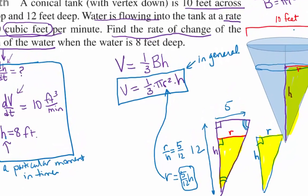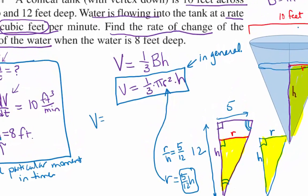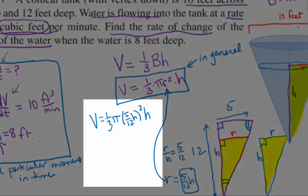We'll have V equals 1/3 pi. Instead of R squared, we have 5/12 H quantity squared times H. Now we have a relationship between V and H, and now we can find the derivative to get the relationship between DV/DT and DH/DT. We're going to have 25 over 144 times 1/3. V equals 25 over 432 times pi times H cubed.